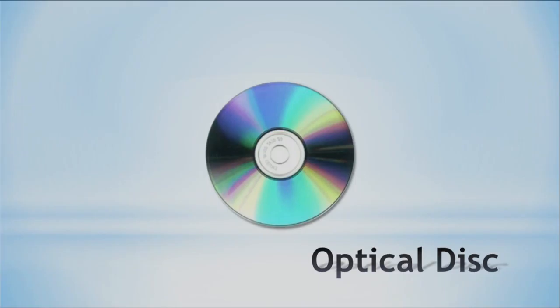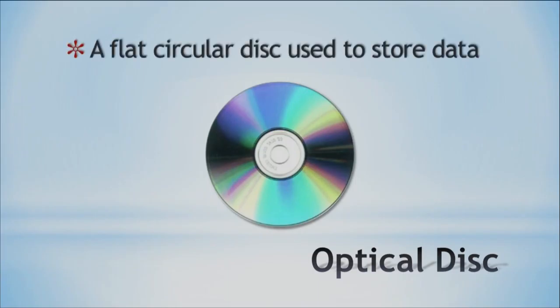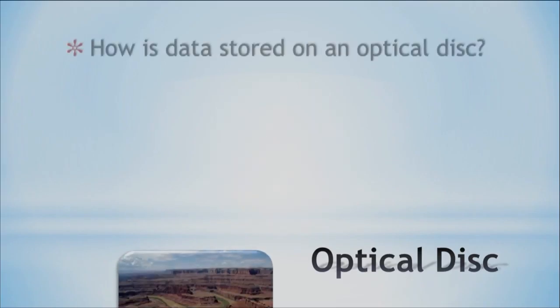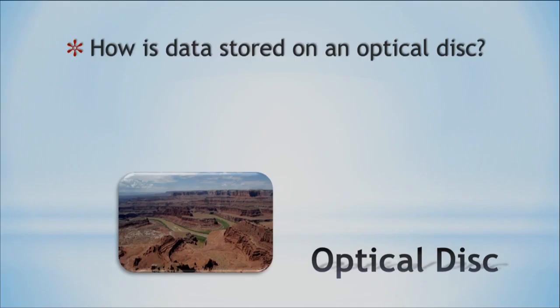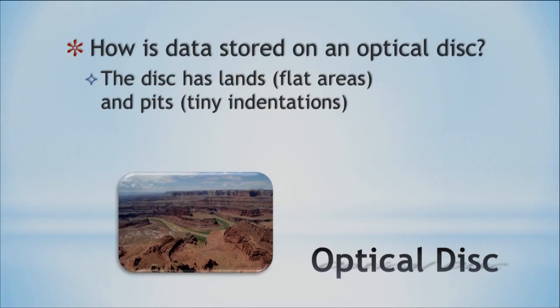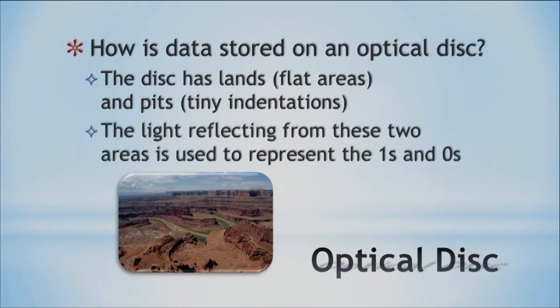The optical disk is kind of what we're talking about. It's flat, it's circular, it's a disk, and we use that to store data. The disk actually has what we call lands, which are the flat areas, and then pits, which are tiny indentations in the optical disk. What happens is the light reflects from these two differently — if light hits a flat place it reflects differently than if it hits a deeper place. So that represents the ones and zeros. You've got the flat areas called lands and the pits, and depending on how the light bounces off, you get your ones and zeros.